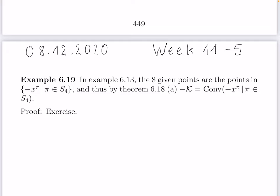We go back to Example 6.13, where we had a four-person convex game — the new water supply system for four communities with a cost function. There was a claim that the core is the convex hull of eight vectors, eight given points in ℝ⁴. Now we can understand these eight points. I claim they are precisely the permutation vectors which had been defined in Theorem 6.18 for this game.